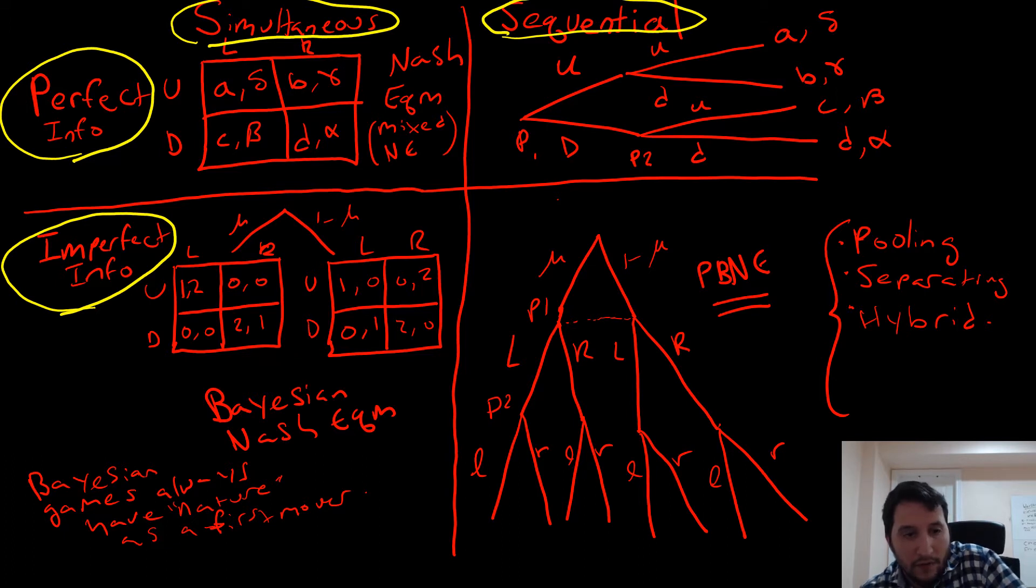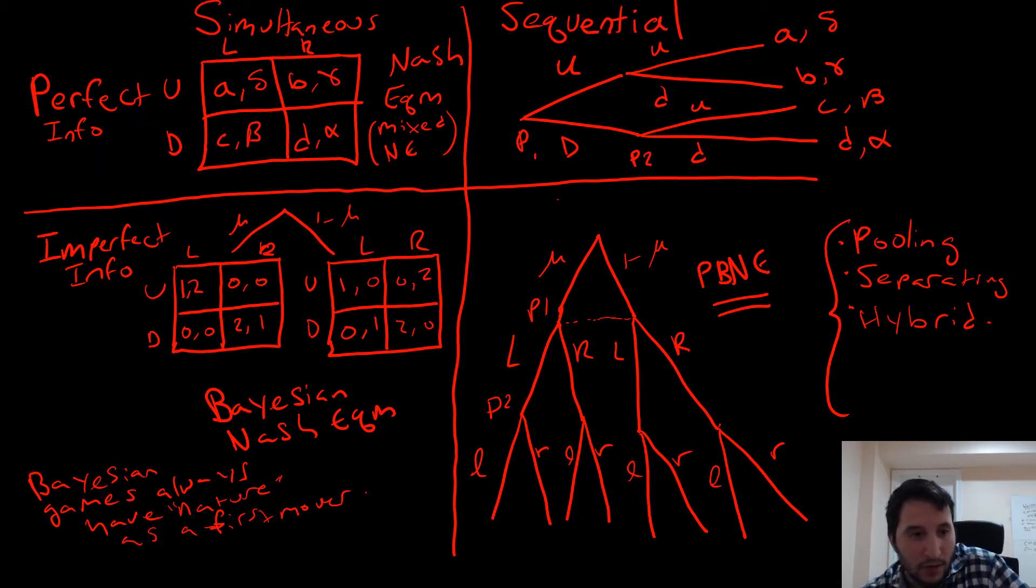For our perfect information simultaneous move games, we use this matrix which we refer to as a normal form game. Alternatively, if we're looking at games progressing over time, we have a sequential move game. This is represented as an extensive form, and with that comes subgame perfect equilibrium.